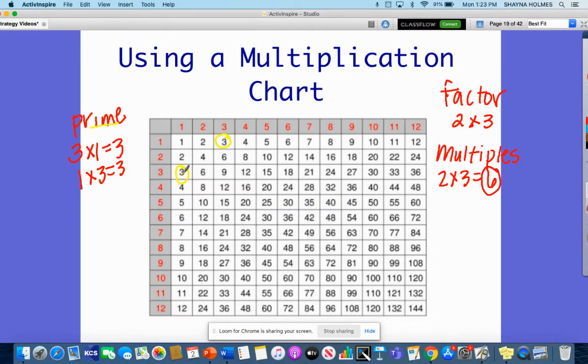Over here, another three. Even though it's shown up twice on my multiplication chart, the factors are still one and three. So itself and one. That means it is prime.